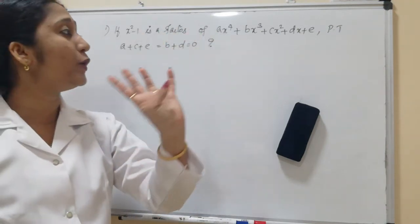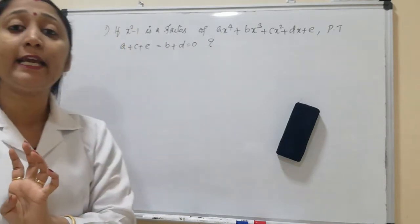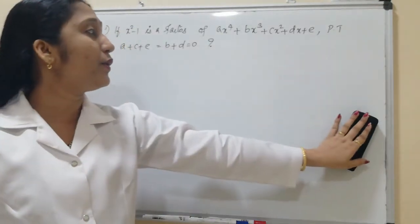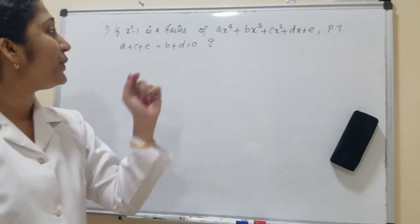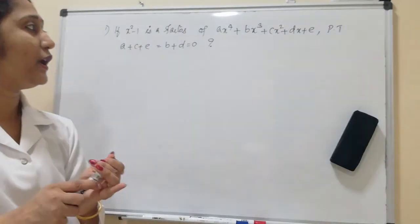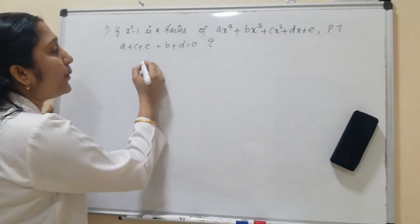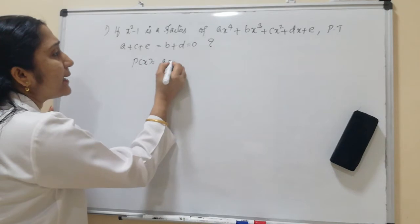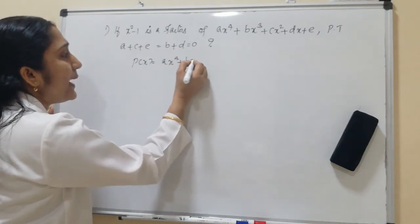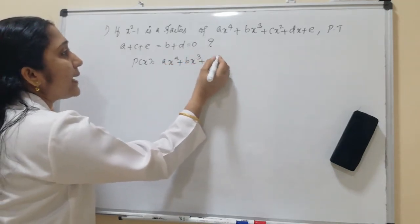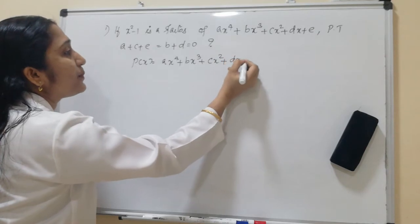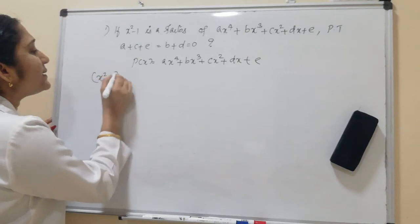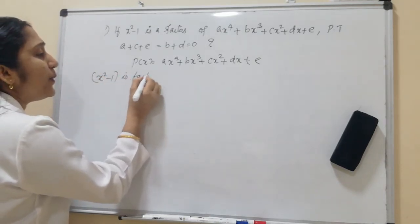We are given a 4th degree polynomial, and if the factor is a second degree polynomial, we have to prove this. Let us see how to solve this using the factor theorem. Let p(x) = ax⁴ + bx³ + cx² + dx + e. The condition is that x² - 1 is a factor of this polynomial.